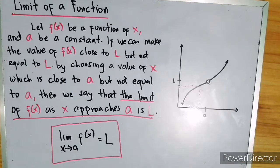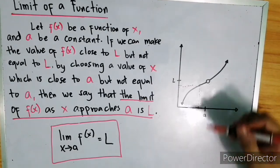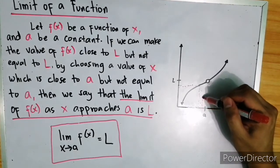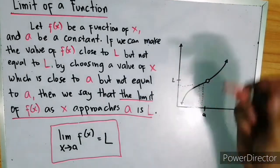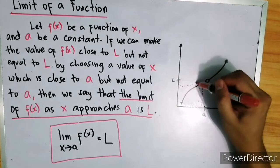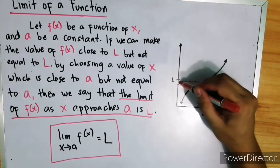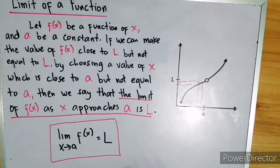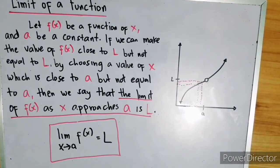And if we choose another number which is closer to a, then the function will give us another value which is closer to L than the previous one. So that is the general idea of the limit of a function.